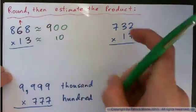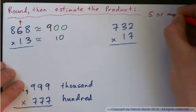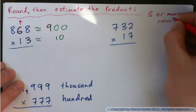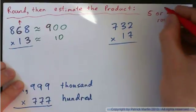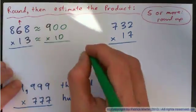So if the number is five or more, if the next digit is five or more, we round up. If it's four or less, we round down. Remember that?